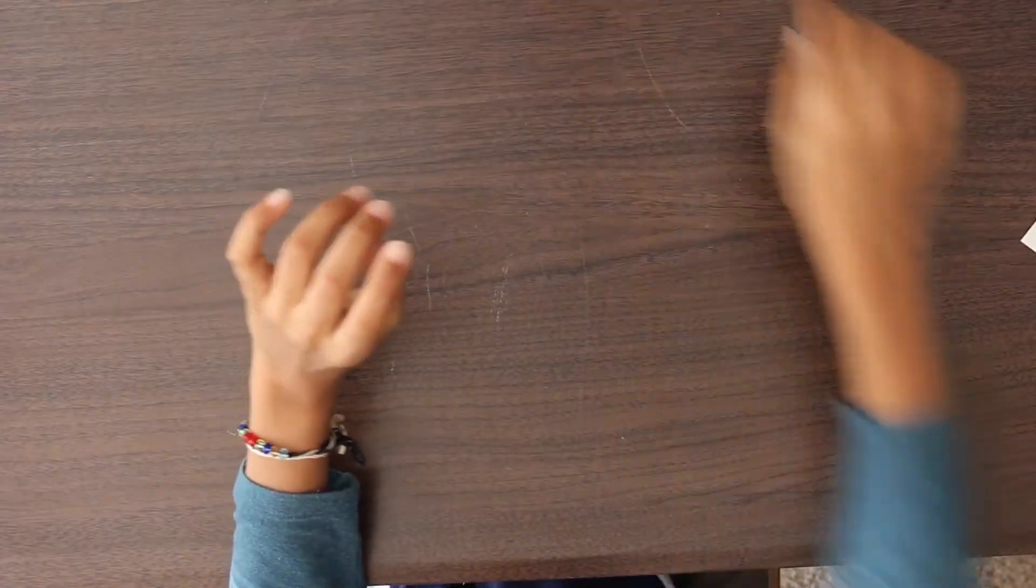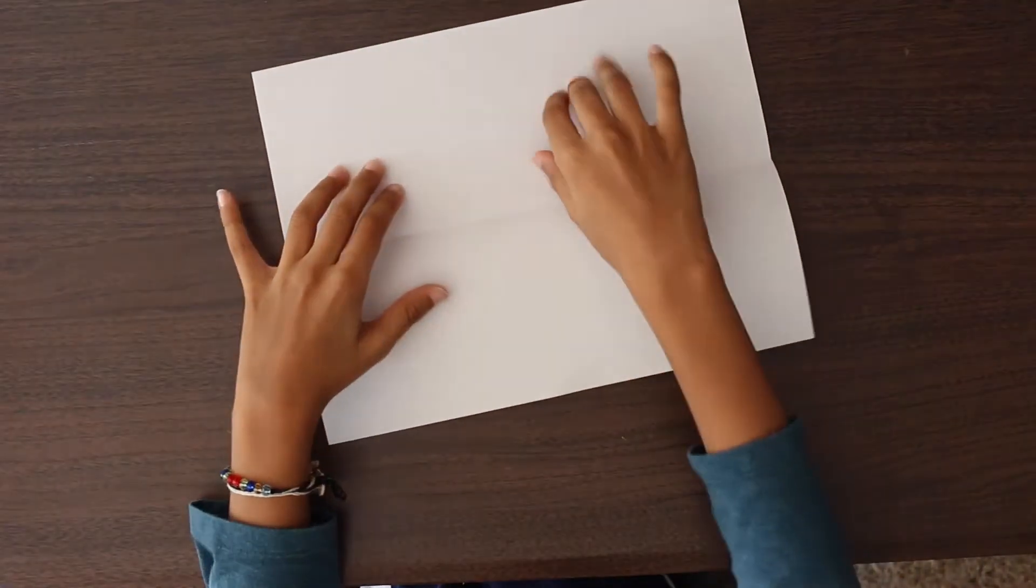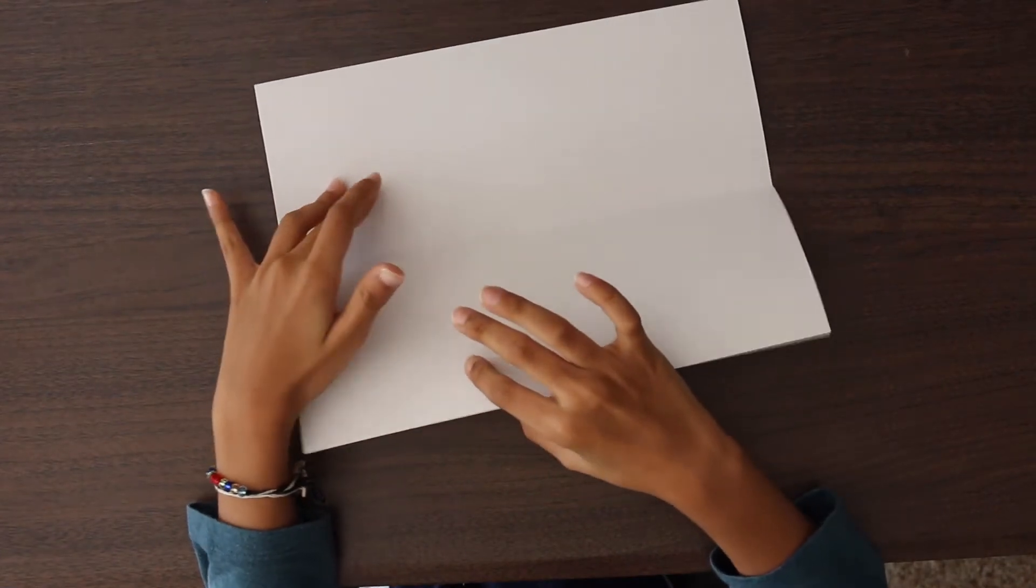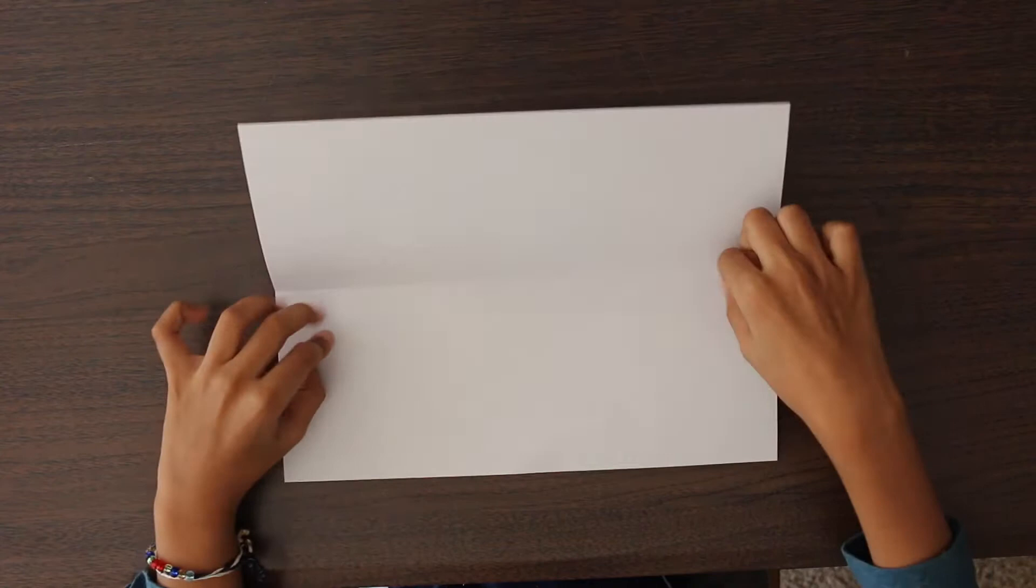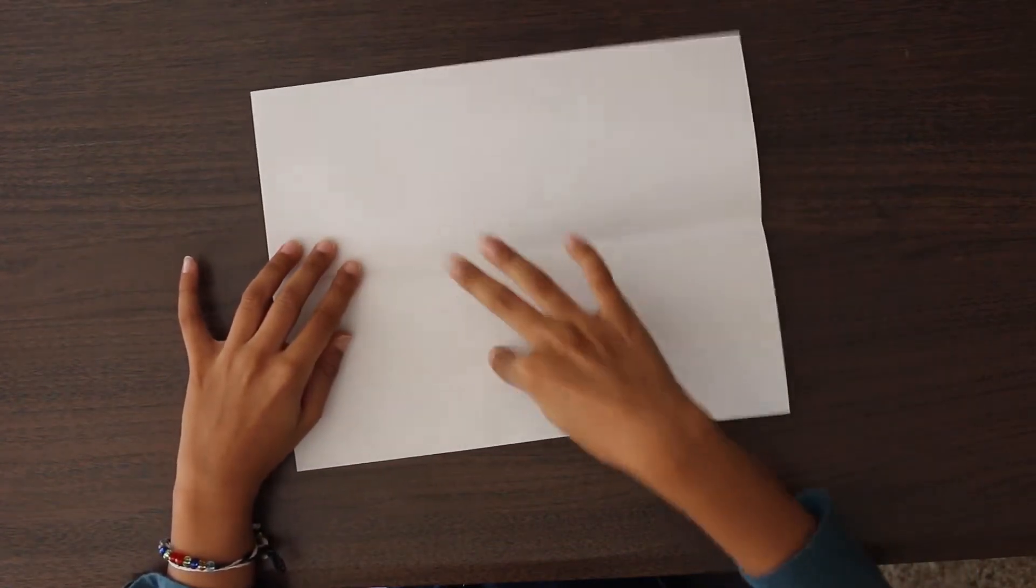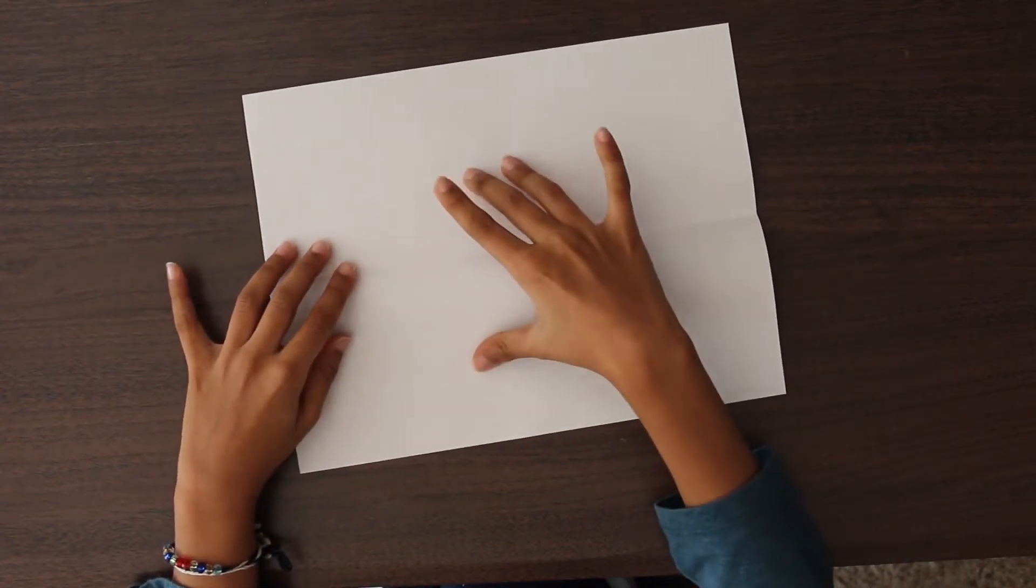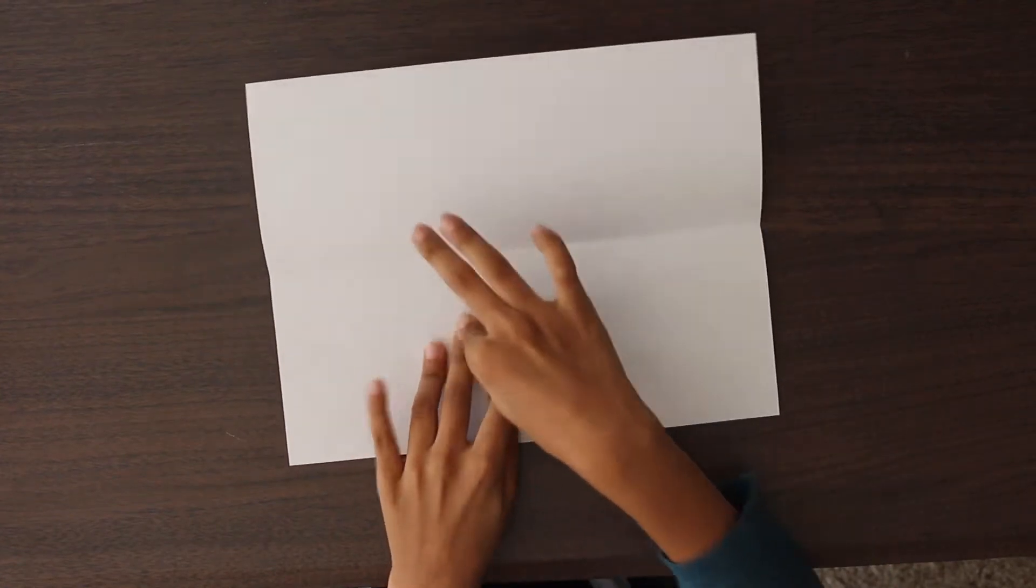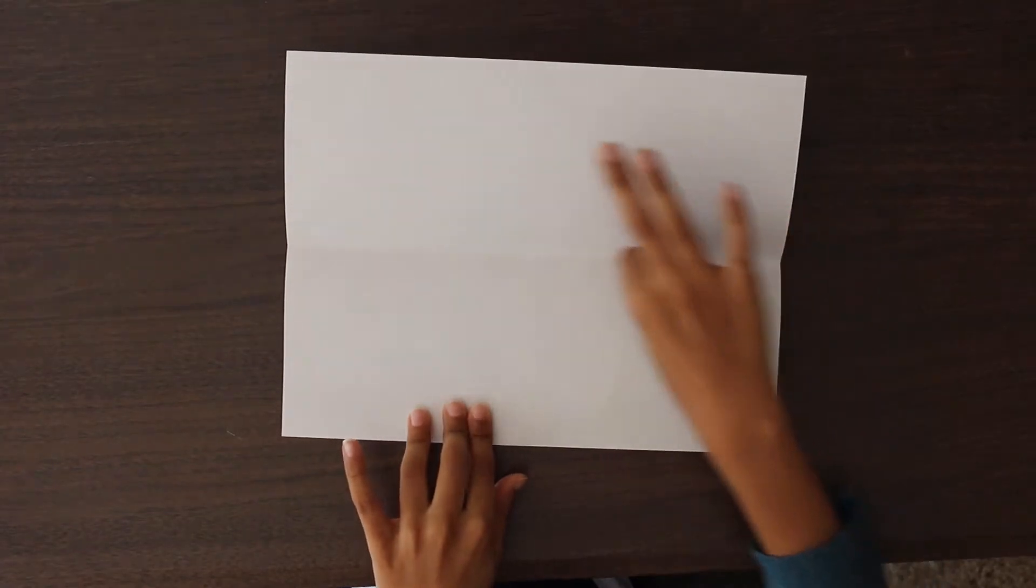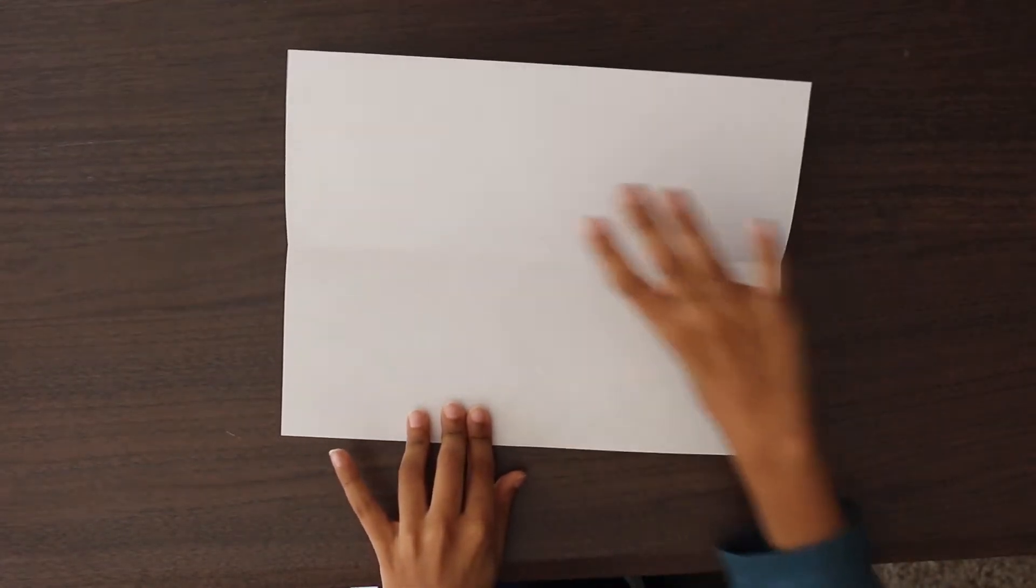So first take a regular sheet of printer paper or A4 paper and fold it in half. Unfold it and you got two of these. You have to cut to the line. You will get two boomerangs out of one sheet of paper. And after you cut it, you'll get two of these.